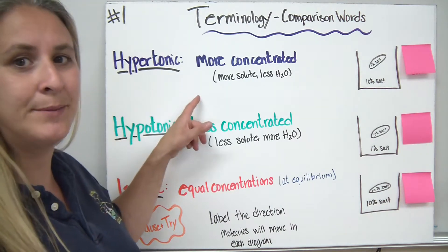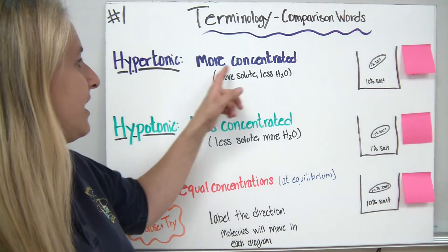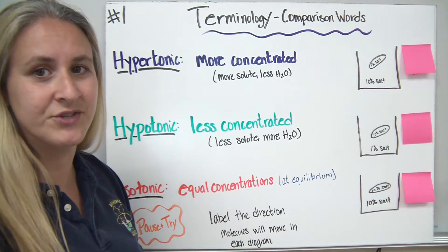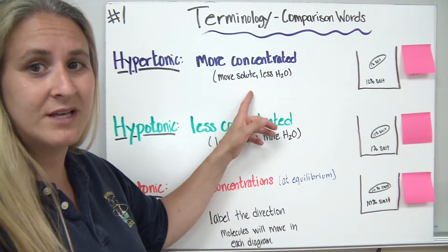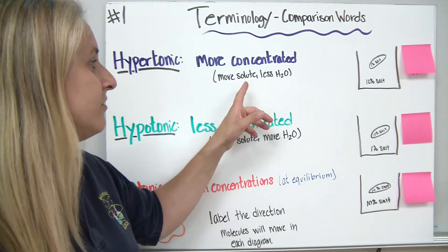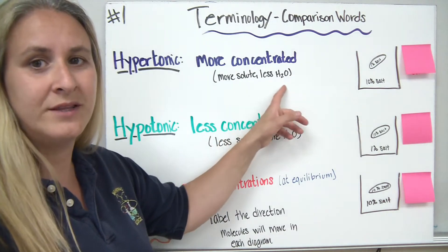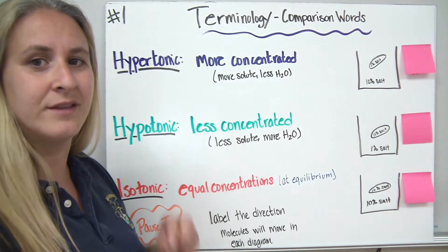The first term is called hypertonic. Hypertonic means that it's more concentrated. So a better description for that is that there's more solute or more things dissolved in the solution, which would mean there's less water compared to the things dissolved.